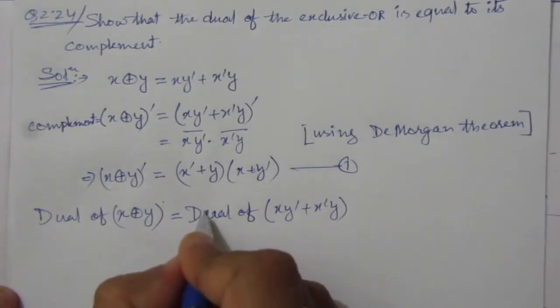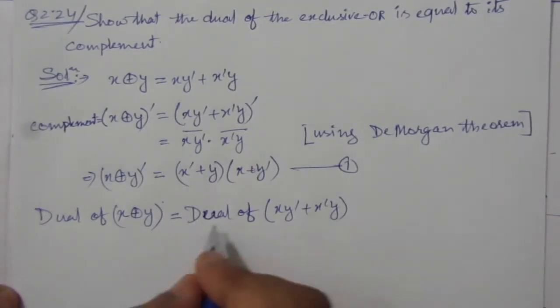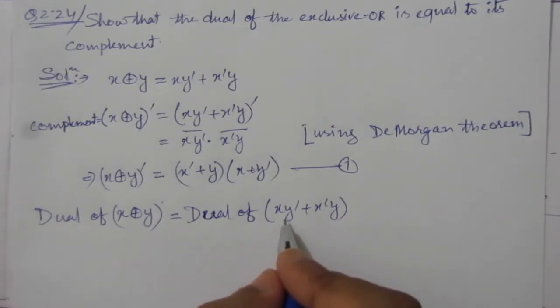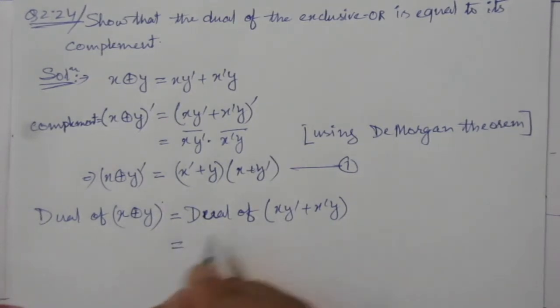So what we can write here? Dual means nothing but we have to replace the AND gates with OR gates. That means multiplication we have to replace with addition, and addition we have to replace with multiplication.